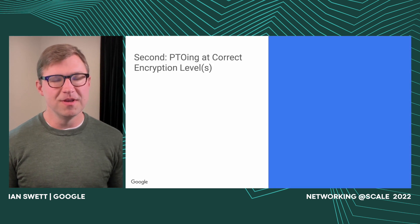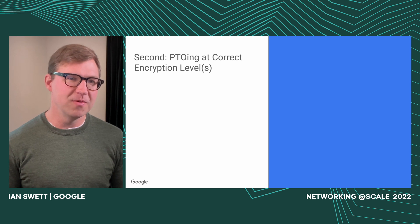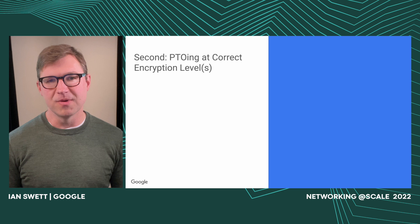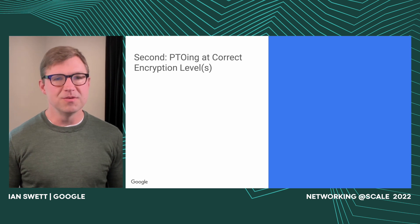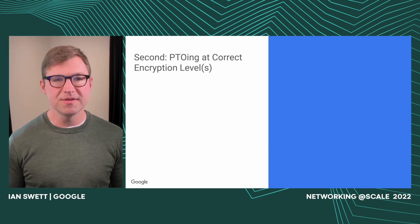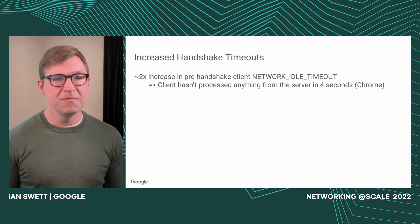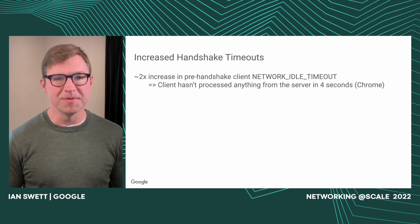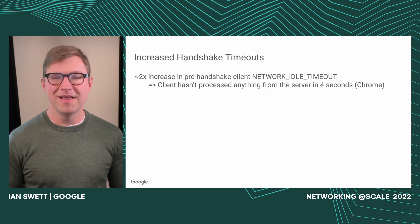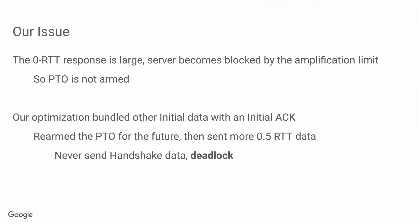The second issue is making sure that when the probe timeout fires, you actually send at the correct encryption level. The probe timeout is equivalent to the retransmission timeout in TCP in many ways — you have outstanding data that's unacknowledged, and you're trying to figure out which was lost and needs to be retransmitted, and it happens on a timer. We had about twice as many handshake timeouts in Chrome in the 0-RTT experiment than in the non-0-RTT experiment. A handshake timeout in Chrome occurs when the client hasn't received anything for four seconds.